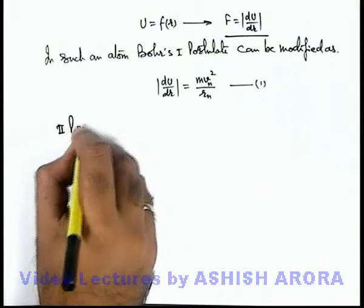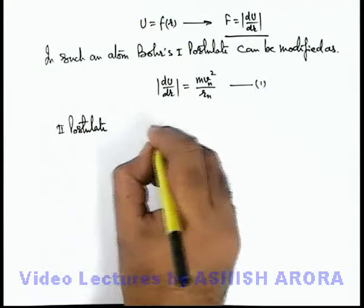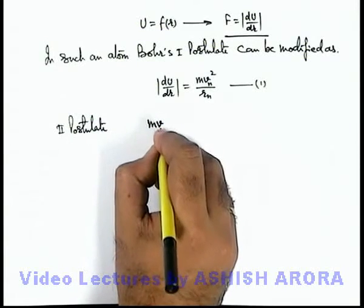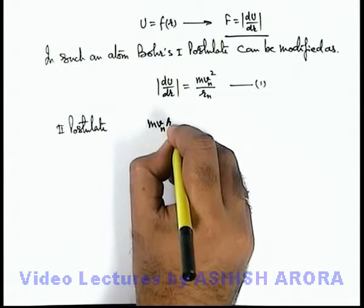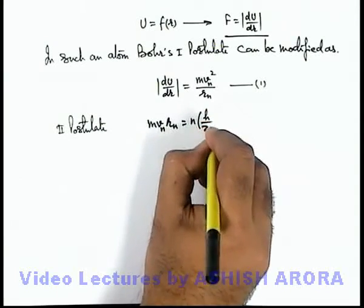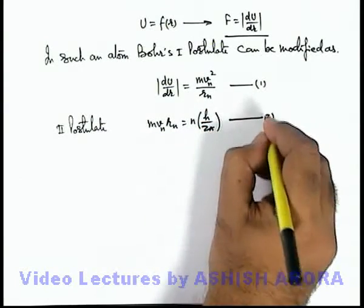And the second postulate of Bohr's model can be taken as it is: mvₙrₙ = n × h/2π. This will be the second equation.